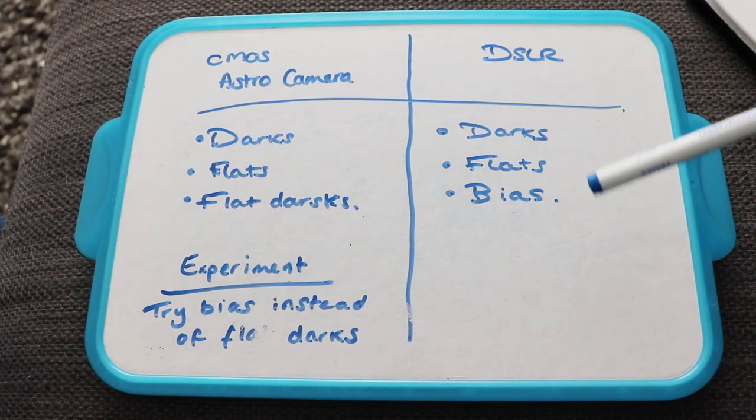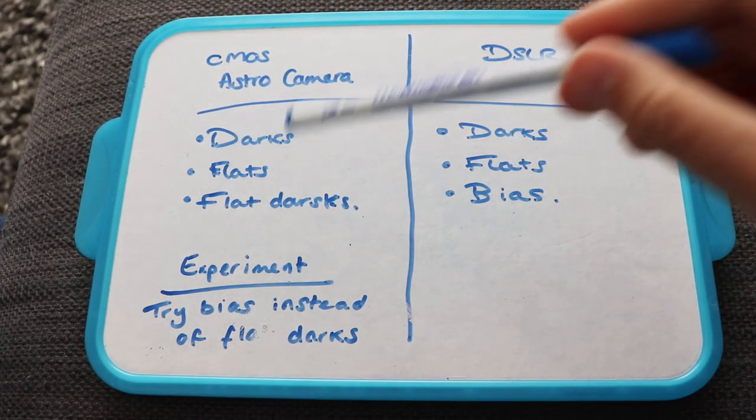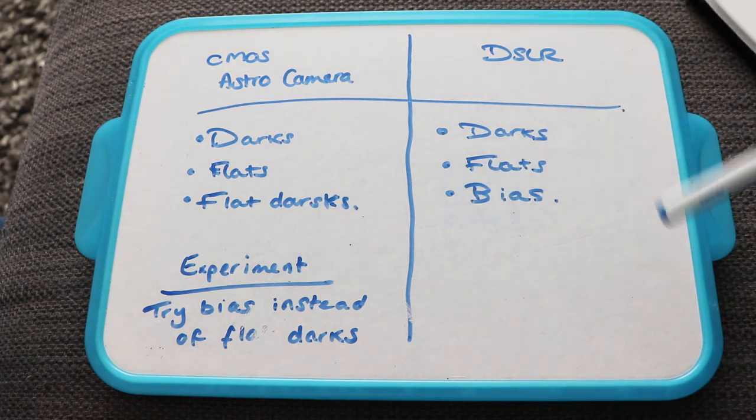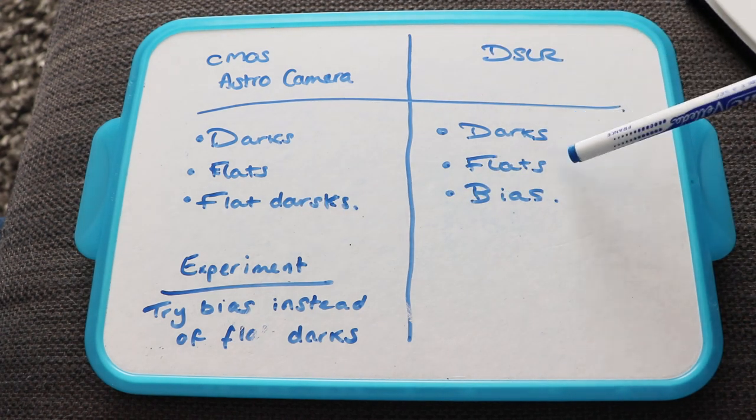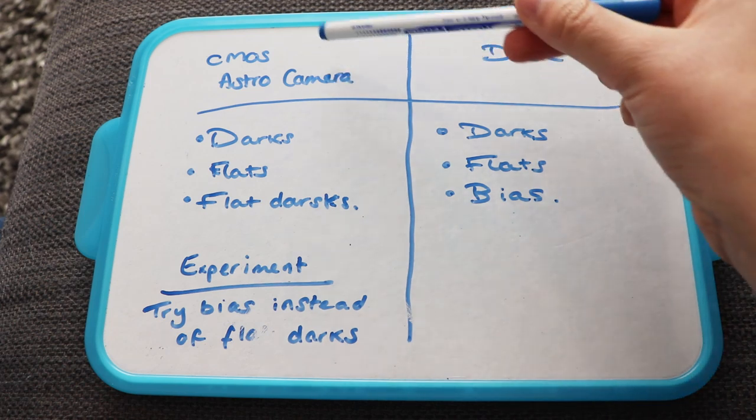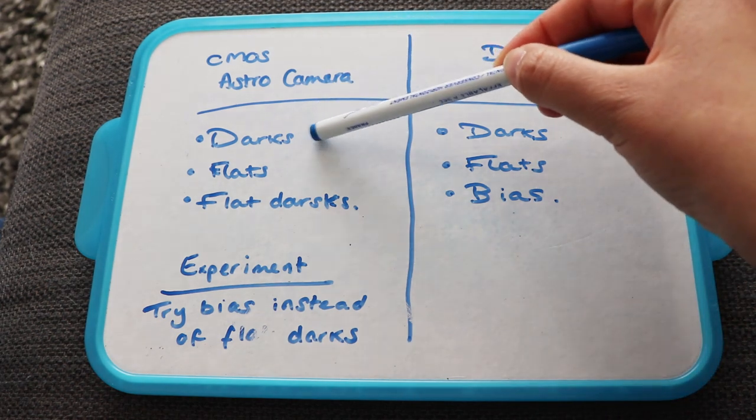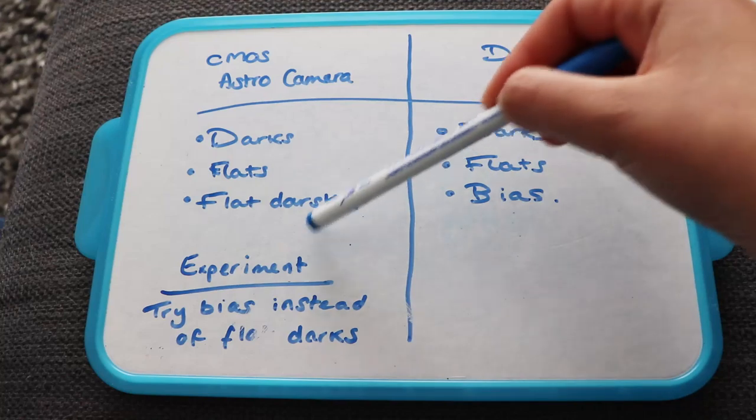These are the calibration frames I would use depending on my setup. So for DSLR I'd be looking at darks, flats and bias. For a CMOS astro camera I'd be looking at darks, flats and flat darks.